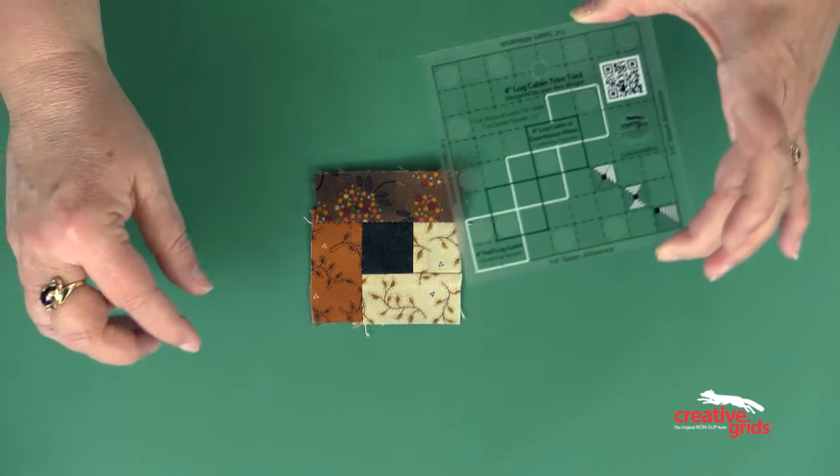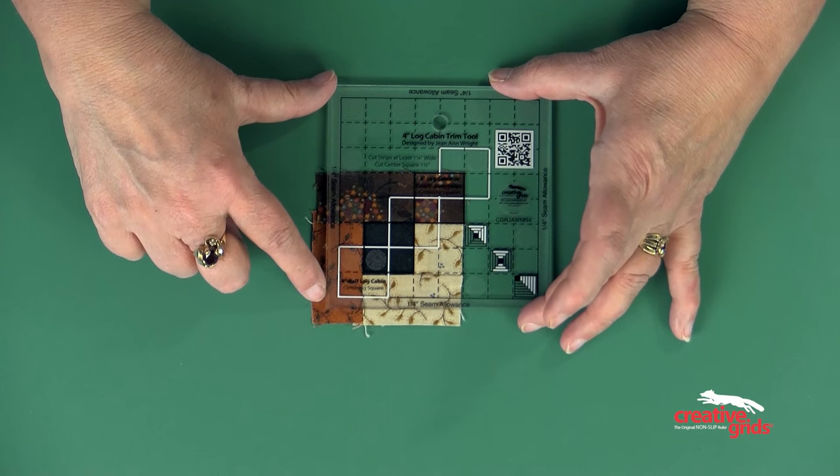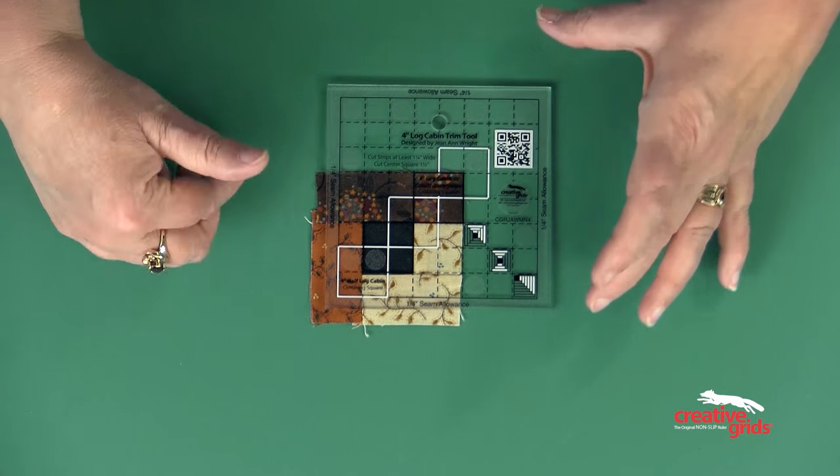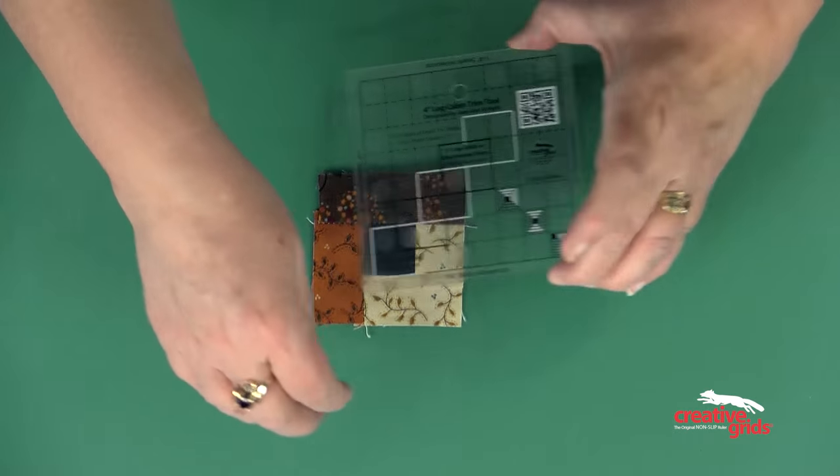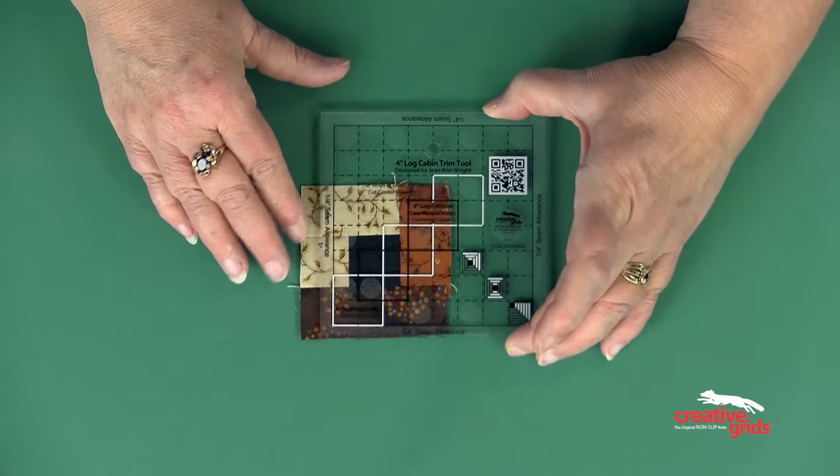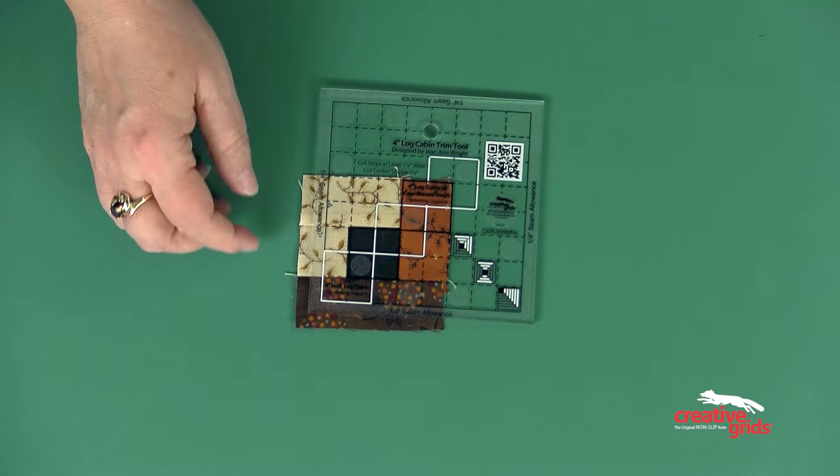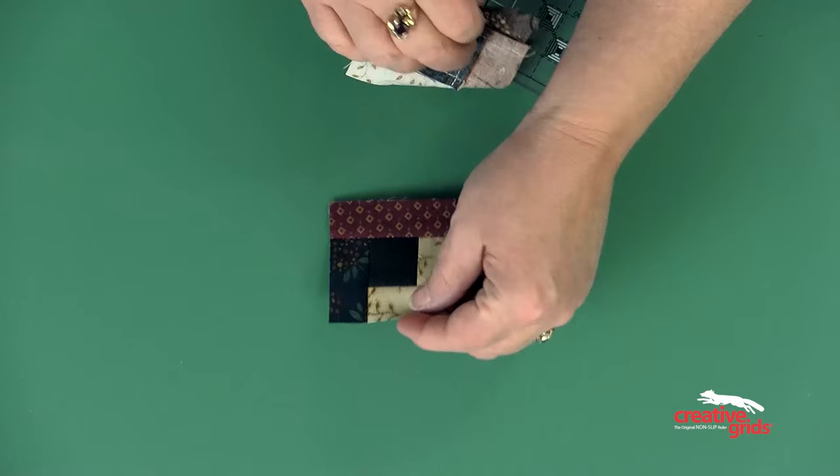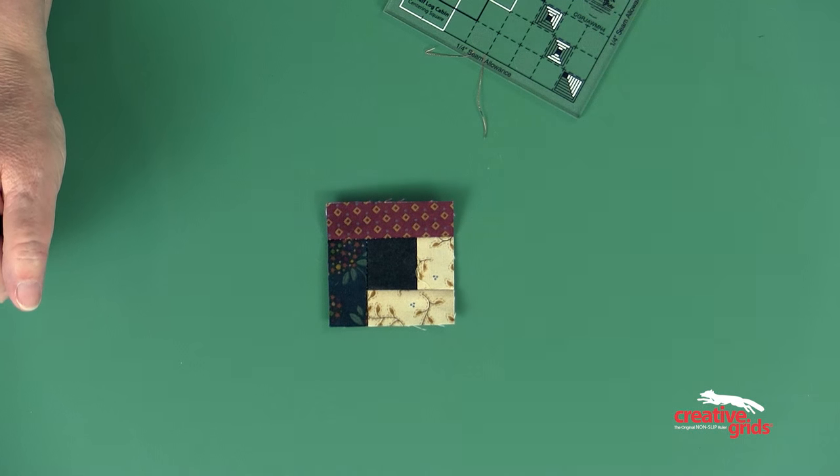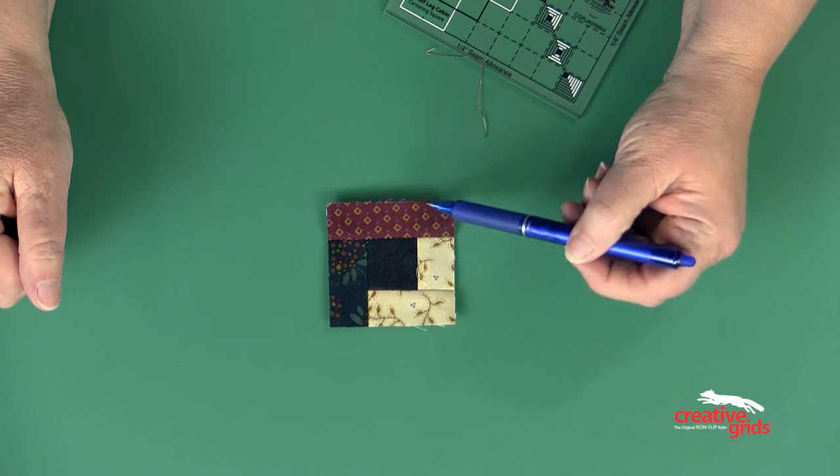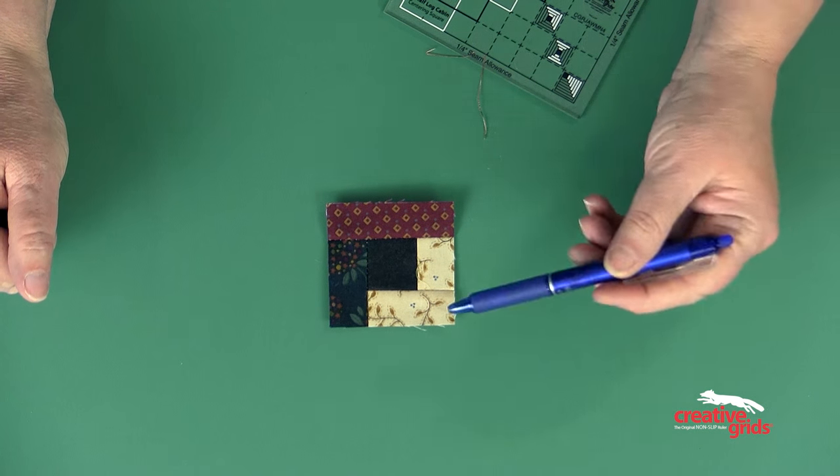Now I'm going to take the black square, which is the first nested square in the series, place it over the center square, trim with the rotary cutter, flip the block, trim the other two sides with the rotary cutter. And then I have a perfect log cabin. In my first round, as you can see, all of the logs are exactly three-quarters of an inch at this point and you have a perfect little log cabin.